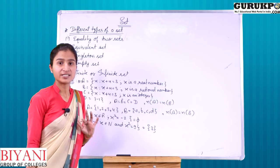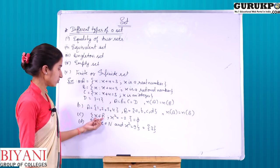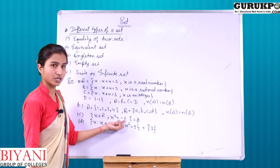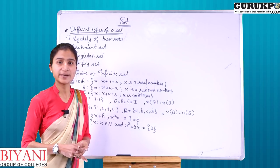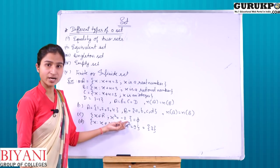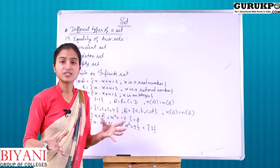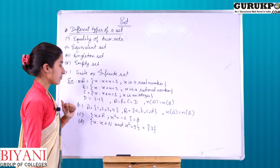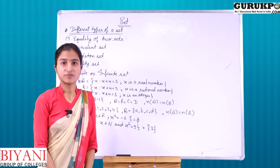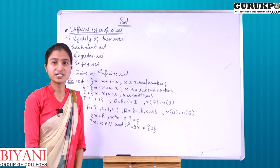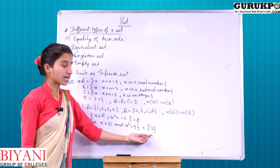Third type is the Singleton Set — a set which has only one element. For example: {X : X ∈ ℝ, X = −1}. Fifth type is the Empty Set (null set) — a set which has no element. For example: {X : X ∈ ℝ, X² = −2} — since √(−2) is not a real number, this set is empty. Then we have Finite and Infinite Sets. A finite set has a finite number of elements; an infinite set has an infinite number of elements. For example: {X : X ∈ ℕ, X = 9} is a finite set with only one element, which is 3.